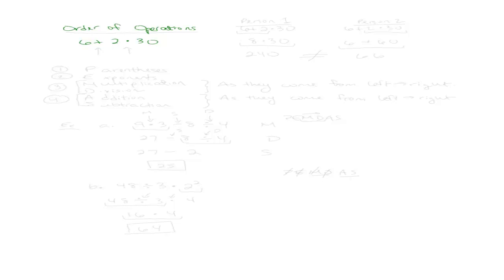6 plus 2 times 30. Now we know some properties from addition and subtraction. The commutative property of addition tells us we can go in any order we want for adding numbers together and the order doesn't matter. Same for multiplication — we can multiply numbers in any order we want. But in the case where we have multiple symbols like addition and multiplication, we do need to take care of this in a specific order. We can't just do it in whatever order we want.